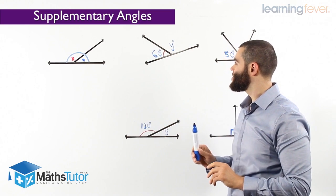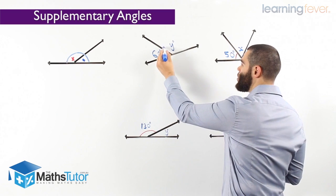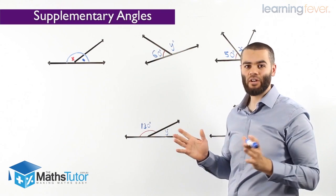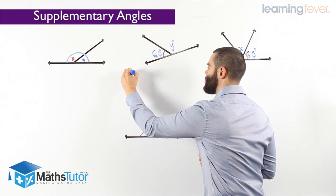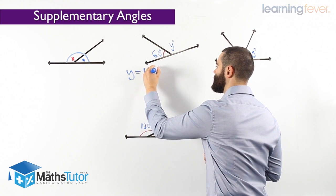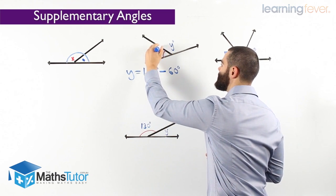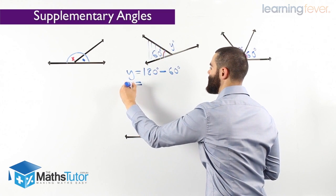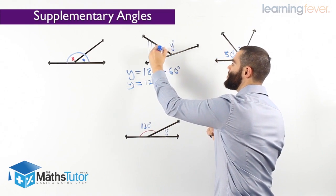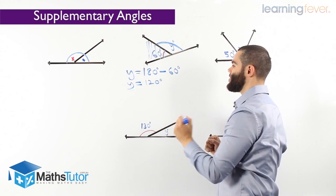Now let's work out how to find a missing angle using supplementary angles. We want to work out y, which is missing. We know that this angle is 60 degrees, and we know that both together add to 180 degrees. So we write: y equals 180 degrees take away 60 degrees, and we're left with 120 degrees. So y is 120 degrees.